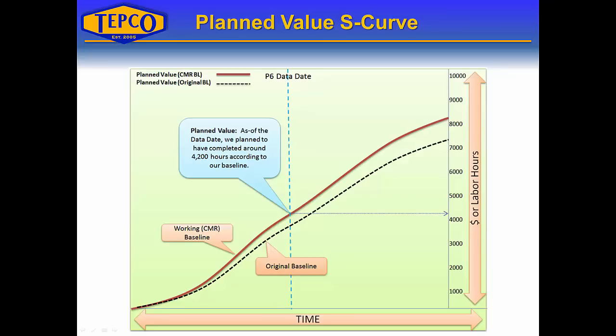Here's an example of the planned value in an S-curve, showing both planned values for the two baselines. We have a working CMR baseline — change management request baseline — and the original baseline. You can see that the CMR baseline has an increase in hours because work was added to that baseline.